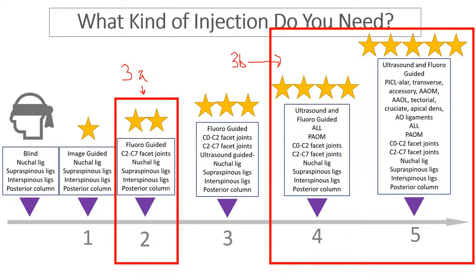That's going to be a level 4 or a level 5 injection. For instance, a lot of patients that are already getting PICL have this in addition to other types of instability, so we can drop down using the anterior approach and easily get the C2-3 ALL, or anterior longitudinal ligament. If we're not doing a PICL, then we've got to use an ultrasound-guided or x-ray-guided procedure to reach that anterior longitudinal ligament at C2-3 right from the front.